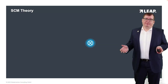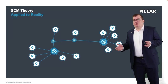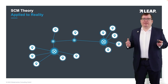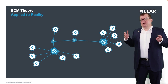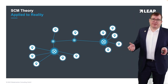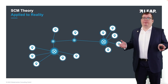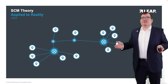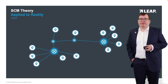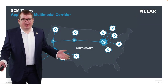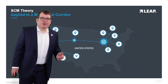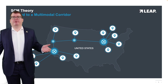In reality, the hub and spoke model is not that neat and organized. It is driven by geographical borders and topographical circumstances, so it is a little bit mixed up and scrambled. Applied to the United States, this example would be seen as the multimodal corridor.